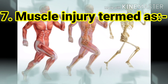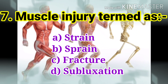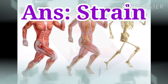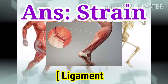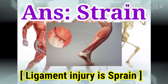The next question: muscle injury is termed as. The options are strain, sprain, fracture, and subluxation. The answer is strain. Muscle injury is strain, and ligamental injury is sprain.